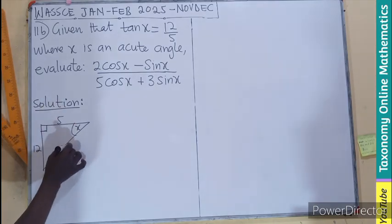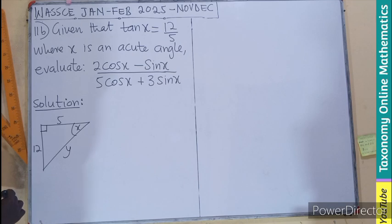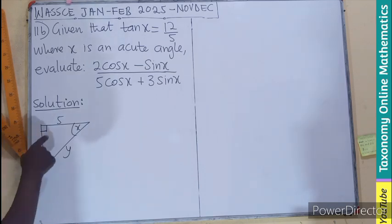So we need to find the value here, this very one. Then finding here, we can use the Pythagoras theorem.